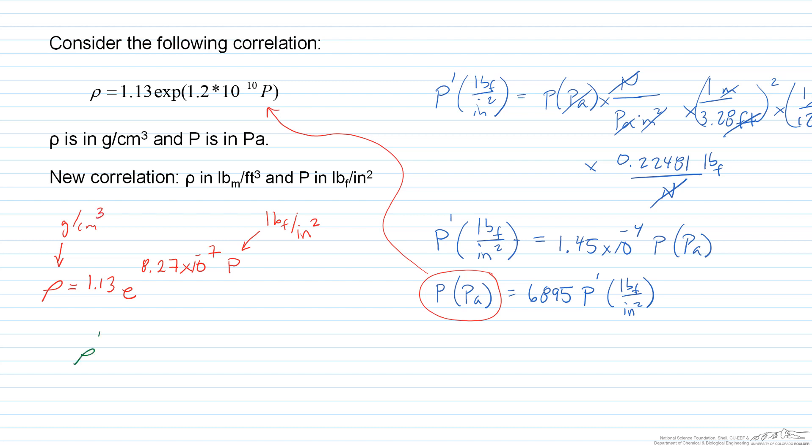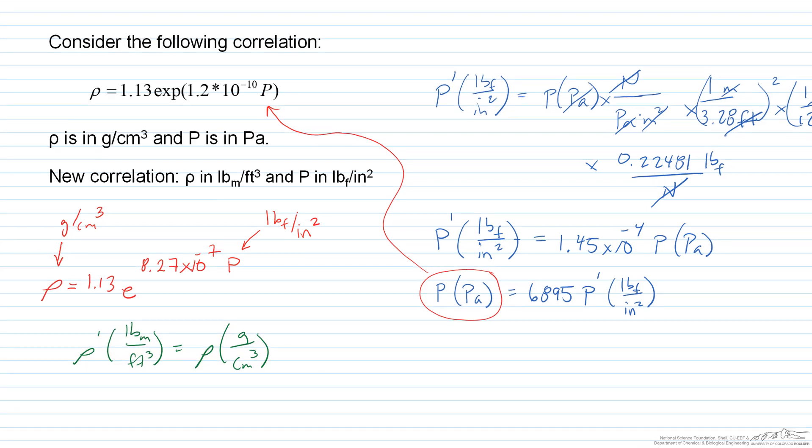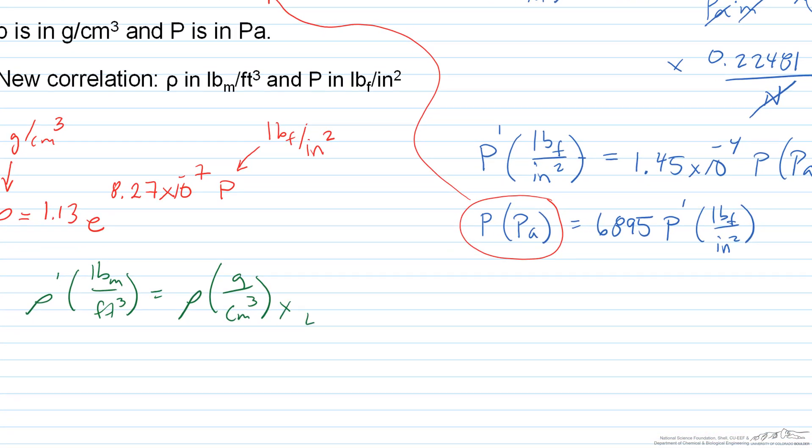So doing something similar, I'm going to say the new density, we want this to be pound mass per cubic foot, is going to be some function of the old density in grams per centimeter cubed. So we just have to do that conversion. And to do that, we want to get rid of the grams in the numerator. So we know that there is one pound mass in 454 grams. The grams cancel.